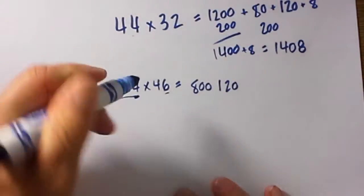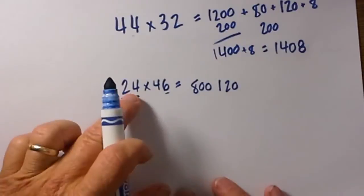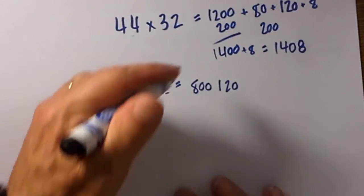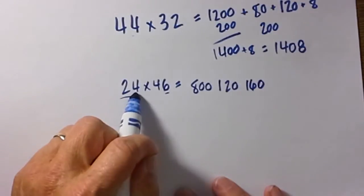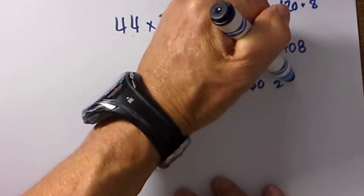Then we move to this digit 4. Then it will be 4 times 40 which is 160. Then 4 times 6 which is 24.